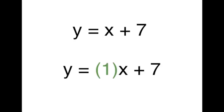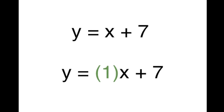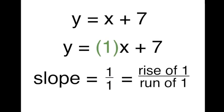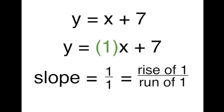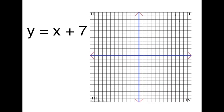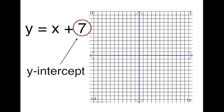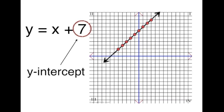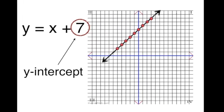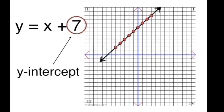y equals x plus 7 — we don't see an m, but the slope is 1. Slope's increasing, 1 over 1. Lines gotta rise before they run. How do we start? Begin on the line and y-x intersection. Let's look back at the equation — what do you see? Y-intercept, it's a 7.